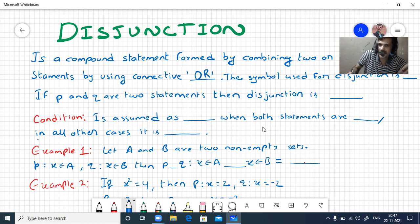If p and q are two statements, then the disjunction of p and q, p or q, can be written like this. The condition is this statement is assumed to be false when both statements are false. Then only it is false. In all other cases, it is true.